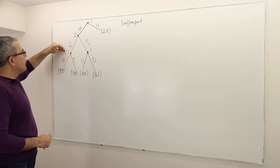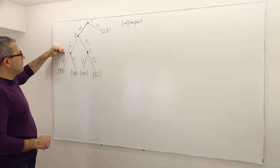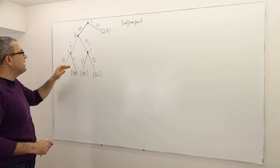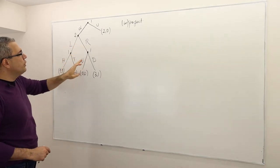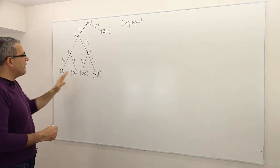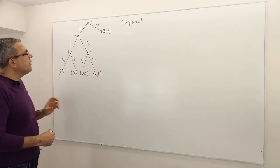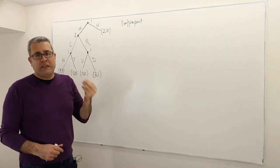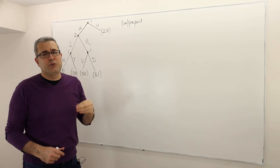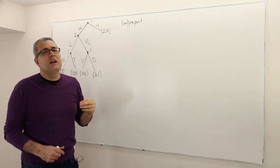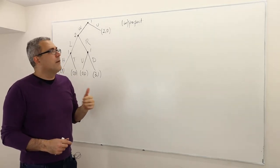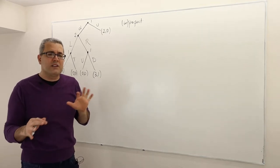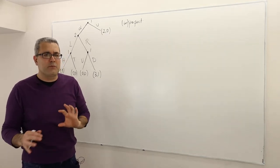The first player moves again after the second player and chooses either H or T, or U or D. The game is then over. The question is: what is the subgame perfect Nash equilibrium strategy profile and outcomes? And I'm going to ask you to verify that some strategies are Nash equilibrium but not subgame perfect Nash equilibrium.